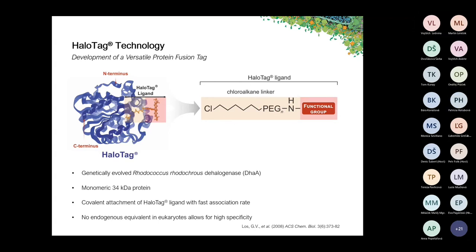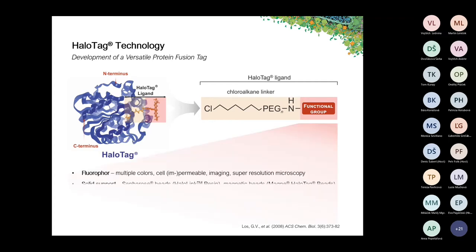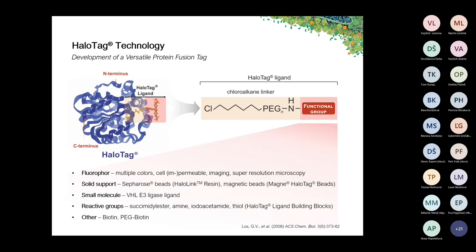Attached to the chloroalkane linker is a functional group, which can be of diverse identity. This could be a fluorophore — we offer a large selection of fluorescent HaloTag ligands in various colors with different physicochemical properties, including cell-permeable and cell-impermeable ligands. The functional group could also be a solid support such as a Sepharose bead or a magnetic bead — the HaloLink resin or the MagneHaloTag beads. Furthermore, it can be a small molecule, and at the end of the presentation I'll show an example where we fused a small molecule that binds to the von Hippel-Lindau E3 ligase to this chloroalkane linker, creating a tool to promote targeted degradation of HaloTag fusion proteins.